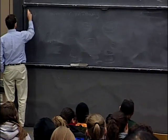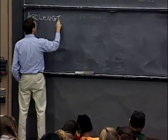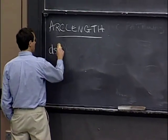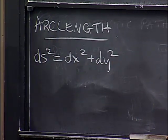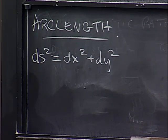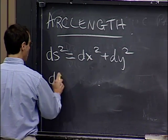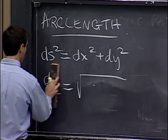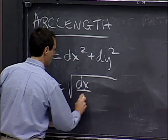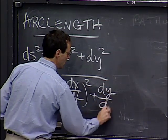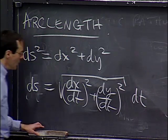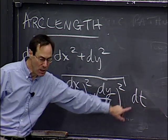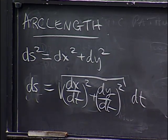Now I have to talk about arc length in this parametric form. The results should be the same as arc length around the circle ordinarily. We start with the basic differential relationship: ds squared equals dx squared plus dy squared. Taking the square root and dividing by dt gives ds equals the square root of (dx/dt)² plus (dy/dt)² times dt. This is the formal connection between the two.